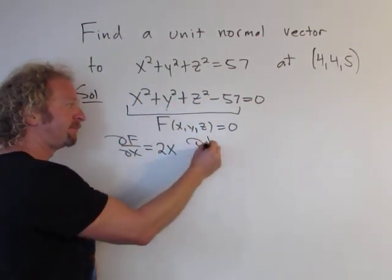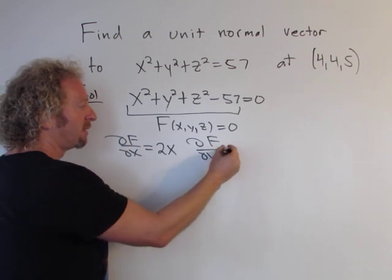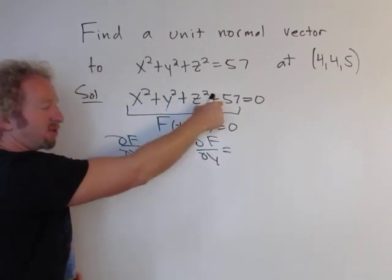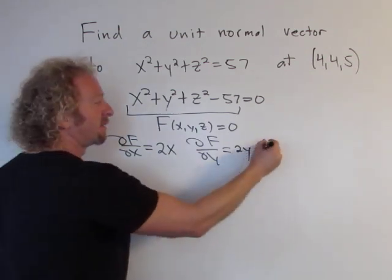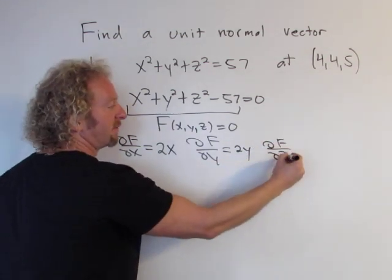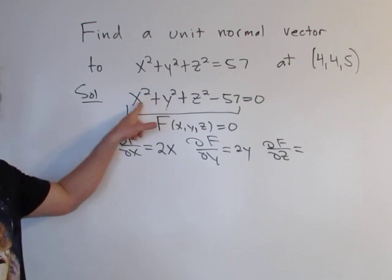And then finally ∂F/∂z, and that's going to be 2z because these derivatives are zero—you hold everything else constant.